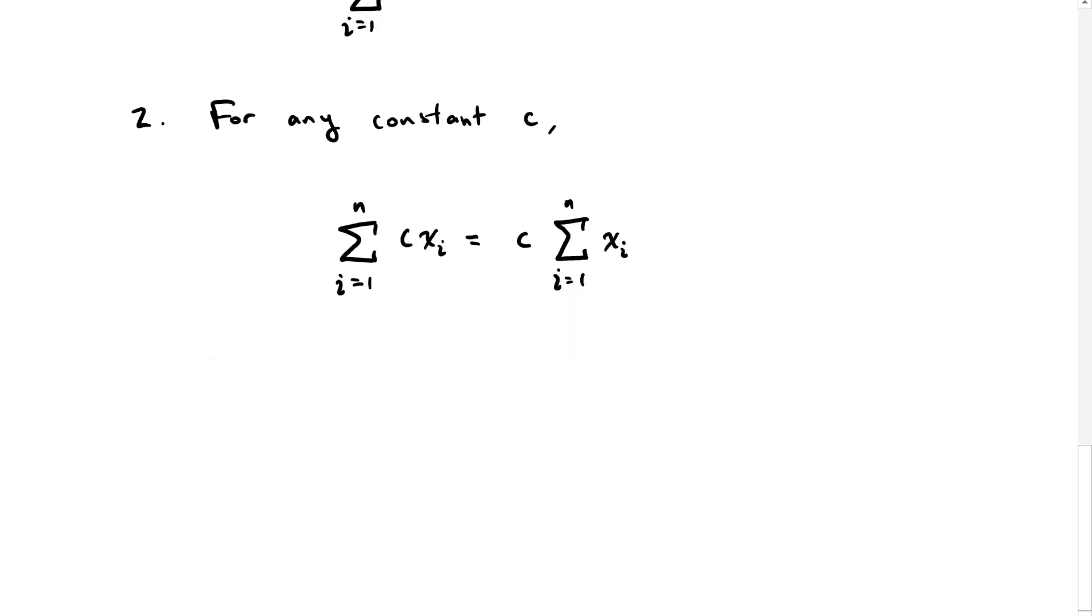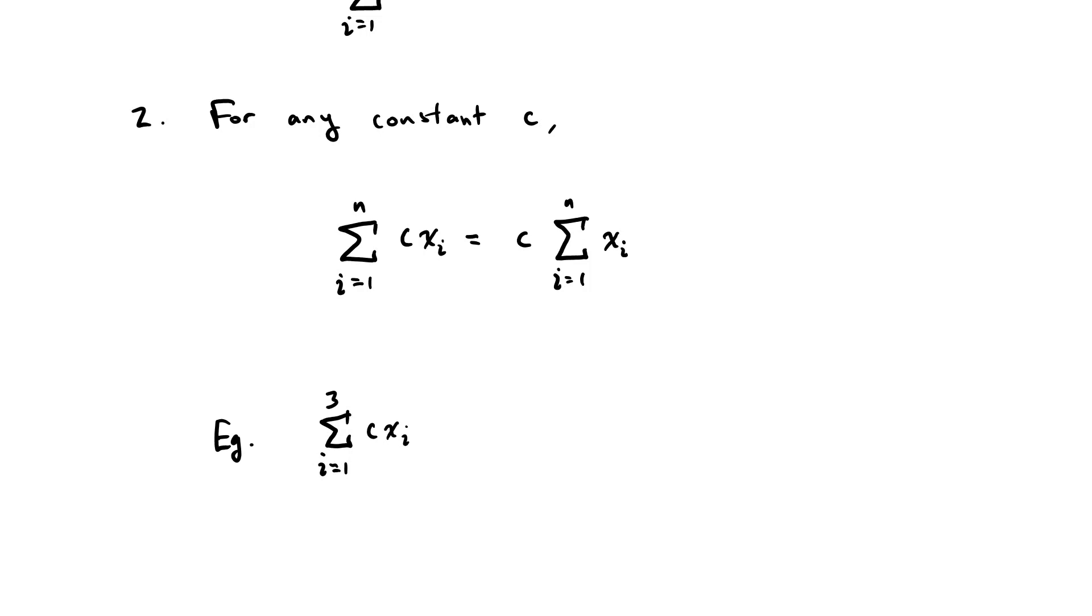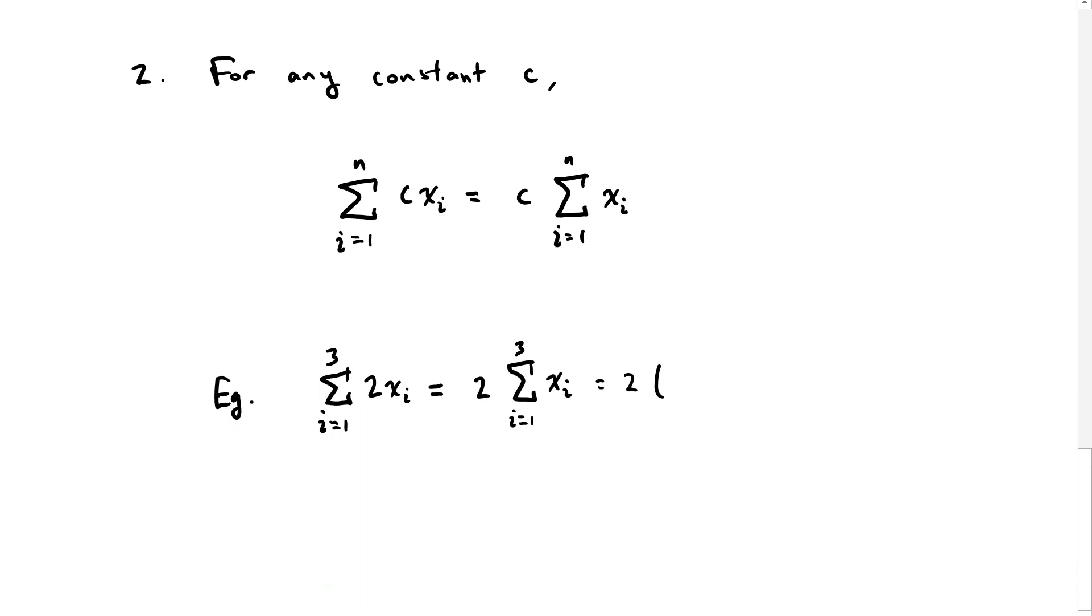Using our same example and our same numbers 2, 4, 6, the summation goes from 1 to 3 of 2xi. We can do our new property: 2 times the sum from i equals 1 through 3 of xi. That's equal to 2 times (2 plus 4 plus 6), which equals 12 times 2 is 24.